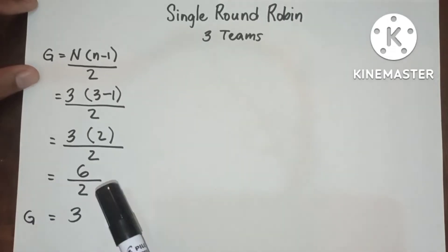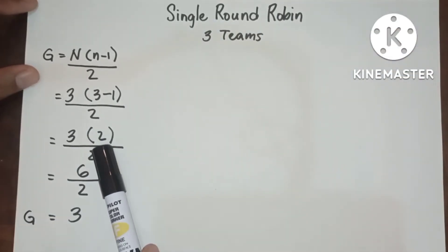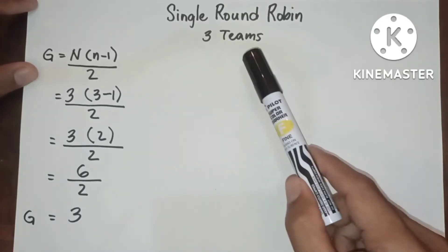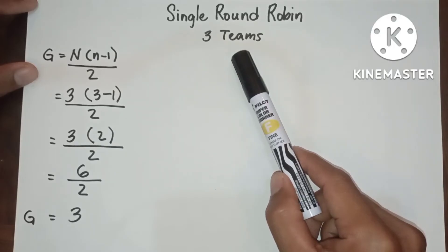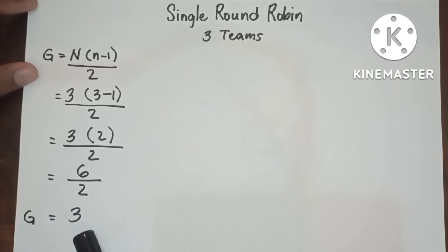3 minus 1 equals 2. We multiply 3 by 2, giving us 6. And 6 divided by 2 gives us 3 games. This means in 3 teams or 3 entries in single round robin, we have 3 games.